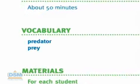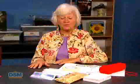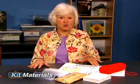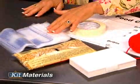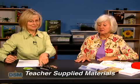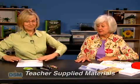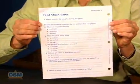The vocabulary introduced is predator and prey. From the kit, you will need the food chain game chart, yarn, masking tape, index cards, popcorn, and reclosable zip bags. You will also need crayons, hole punch, marker, scissors, and a copy of Activity Sheet 11 for each student.